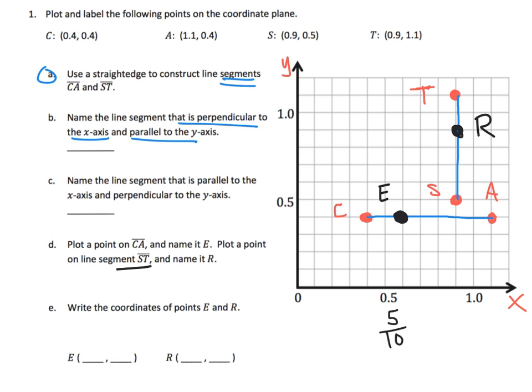And then it says write those coordinates down here. So where is E? Well, E is at 0.6 on the x-coordinate and 0.4 on the y. So 0.6, 0.4 is E. And then R, way over here, looks like it's 0.9 on the x-coordinate, x-axis, and 0.9 on the y. So that's going to be 0.9, 0.9.